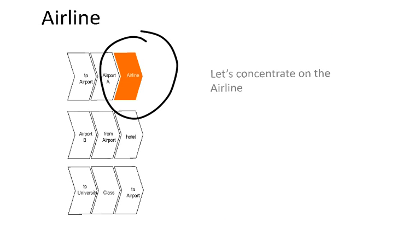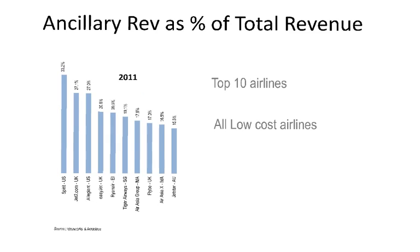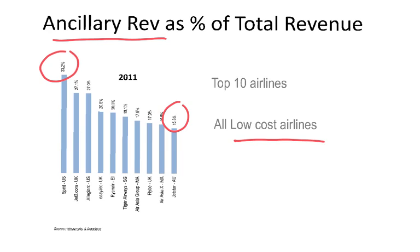Let's concentrate on the airline, in this case EasyJet. If we look at 2011, the ancillary revenue of the top 10 airlines in terms of ancillary revenue generation ranged from 15% at the lowest to 33% at the highest. This is quite an important amount, and all of them were low-cost carriers. So ancillary revenue is more critical to low-cost carriers than to traditional carriers, also called full-service carriers.